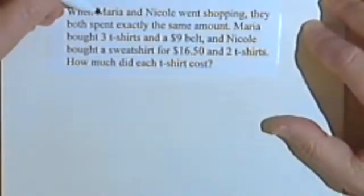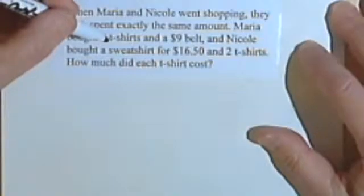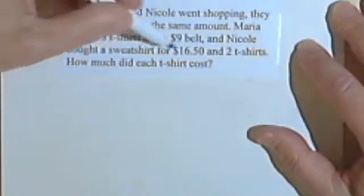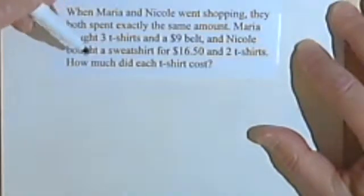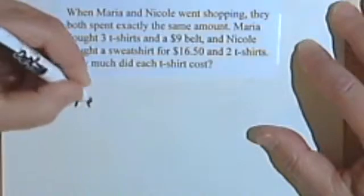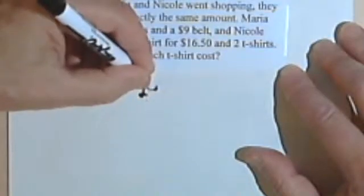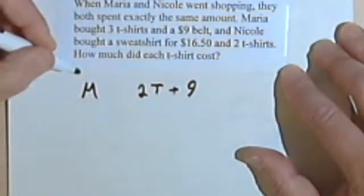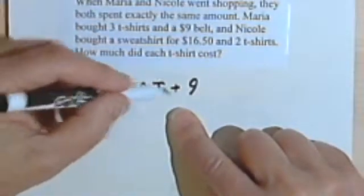Here's another one. When Maria and Nicole went shopping, they both spent exactly the same amount. Maria bought 3 t-shirts and a $9 belt. And Nicole bought a sweatshirt for $16.50 and 2 t-shirts. How much did each t-shirt cost? Okay, so let's take a look. We'll just get our information down here. Maria bought 2 t-shirts and she also spent $9. So the cost for Maria was 2 times the cost of a t-shirt plus $9.